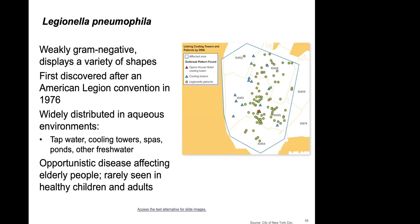Legionella pneumophila is a cause of pneumonia widely distributed in aqueous environments: tap water, cooling towers, spas, ponds, and fresh water. It is an opportunistic pathogen rarely seen in healthy adults, primarily affecting the elderly. It was first discovered in 1976 at an American Legion convention in Philadelphia at the Bellevue Hotel on South Broad Street.